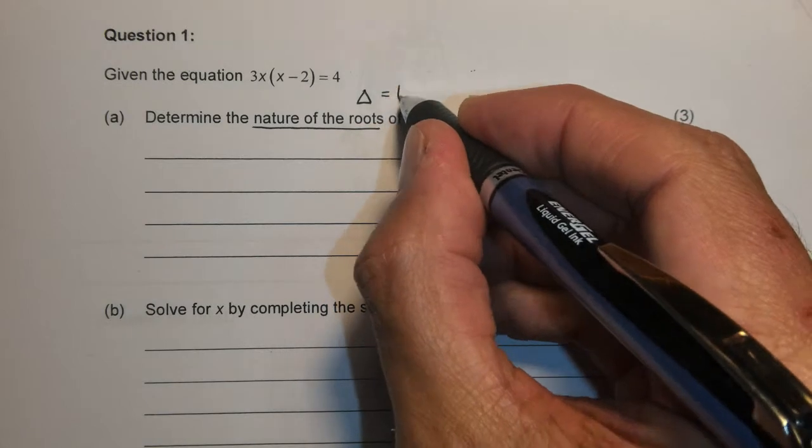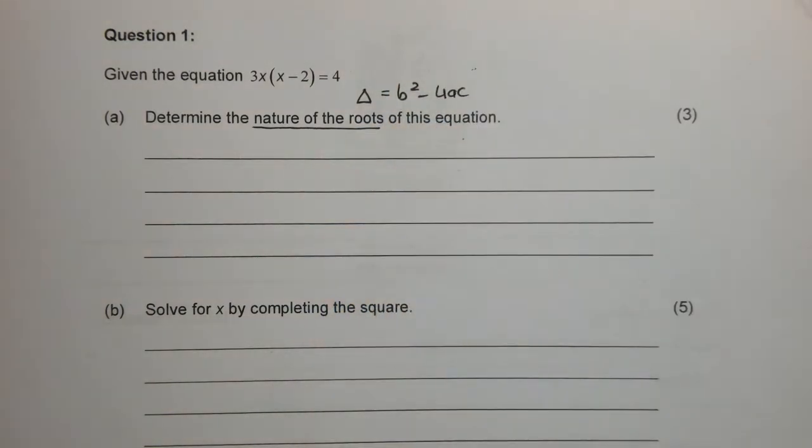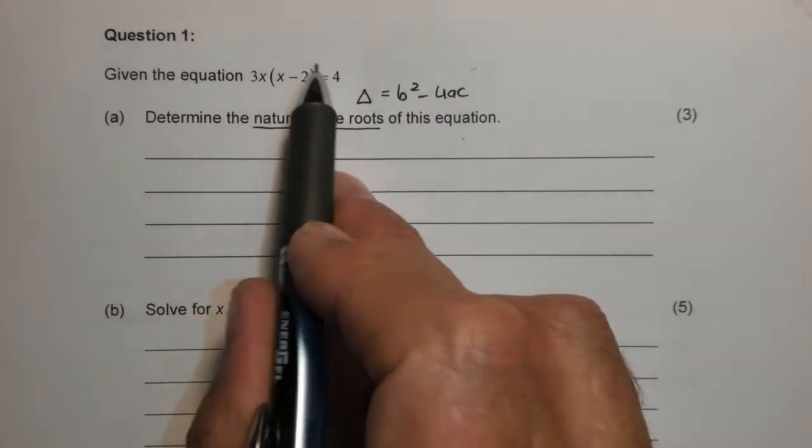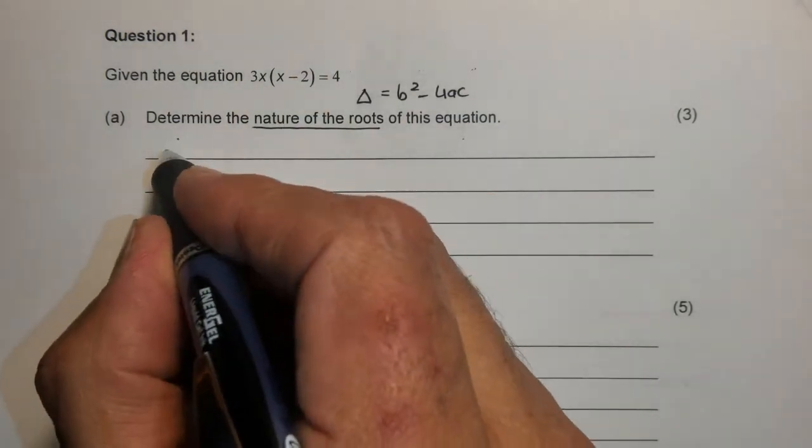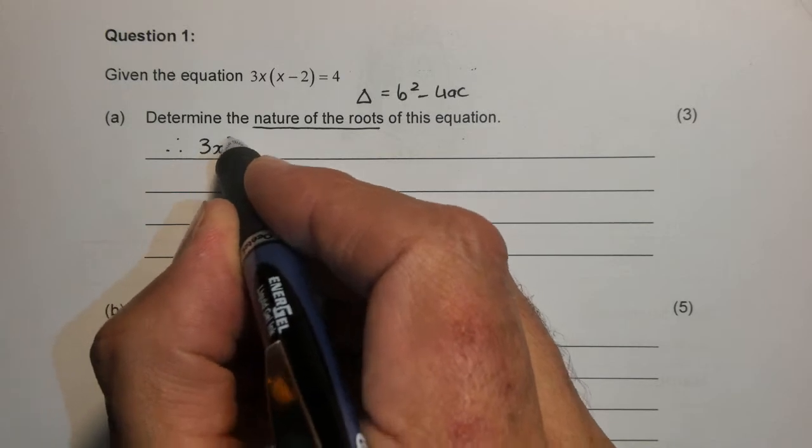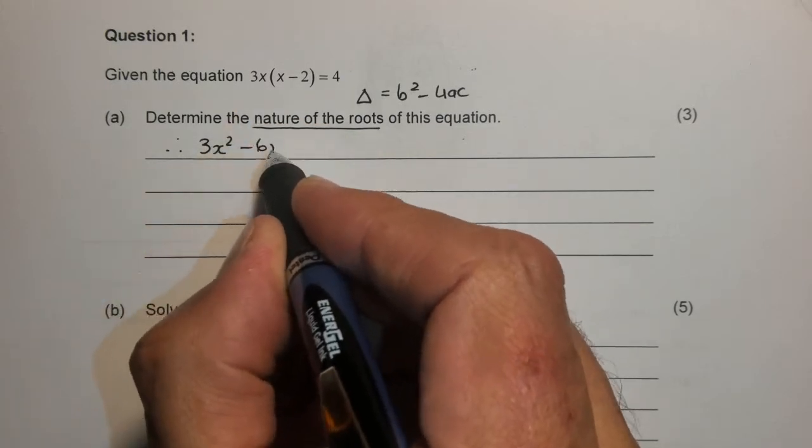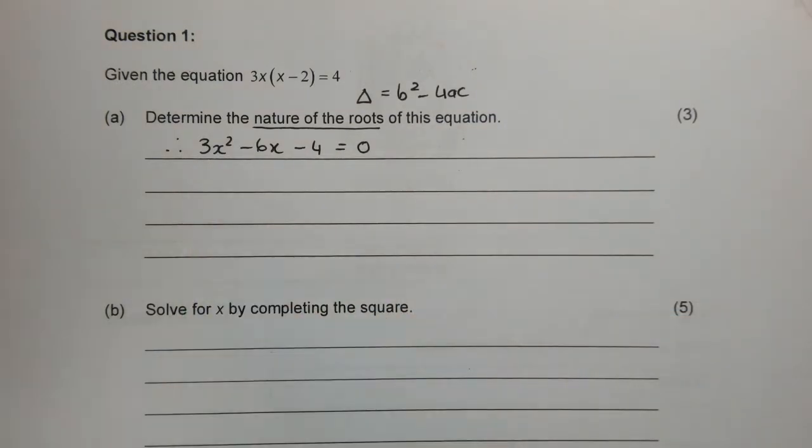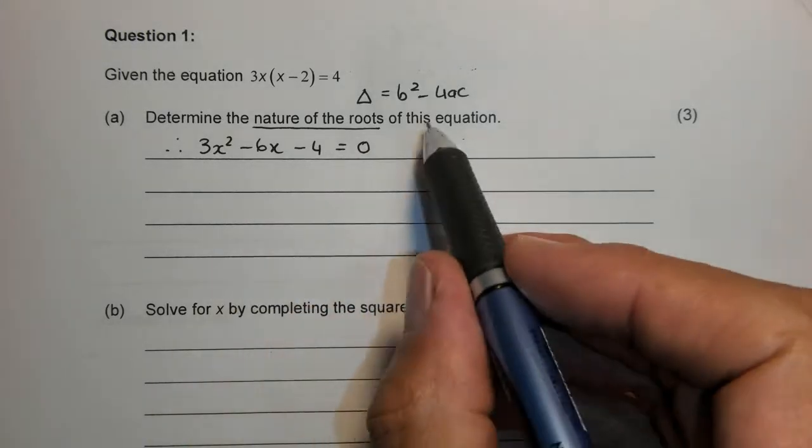Now remember delta is b squared minus 4ac. To be able to do that, we need to get this equation into standard form. So we get 3x squared minus 6x minus 4 is 0. Now it's in the form ax squared plus bx plus c. And now we can apply the discriminant.